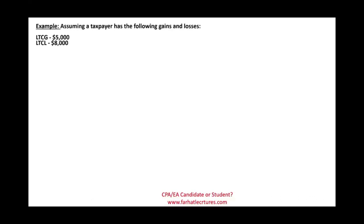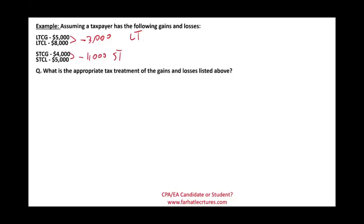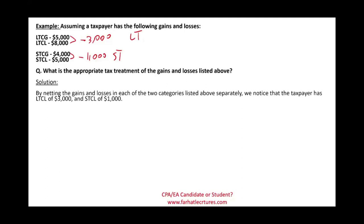For example: a taxpayer with a long-term capital gain of $5,000 and long-term capital loss of $8,000 gives a net negative $3,000 long-term. A short-term capital gain of $4,000 and short-term capital loss of $1,000 gives a net negative $1,000 short-term. In total we have $4,000 of losses. We take $3,000 to offset ordinary income, and the remaining $1,000 is carried forward for future years to offset gains or ordinary income.